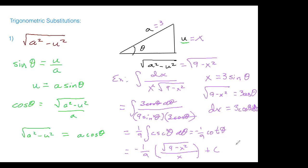That's how trig substitution takes what would have been a pretty tough integral — dx over x² times √(9-x²) — and turns it into something straightforward. We did get lucky with the cancellation of the 3 cos θ; that doesn't always happen. But that's the nice thing about bringing sines and cosines together — there are ways to save a factor or use power-reducing formulas.